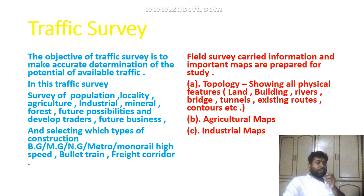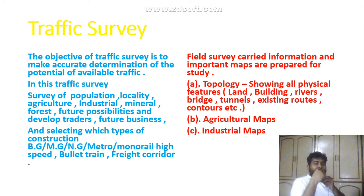The objective of traffic survey is to make a determination of the potential of available traffic. In this traffic survey, surveys of population, locality, agriculture, industrial matters, forest, future possibilities and developed trade, future business are conducted, and it helps in selecting which type of construction — such as broad line, MG, NG, metro, monorail, high speed, bullet train, or freight corridor — is appropriate.